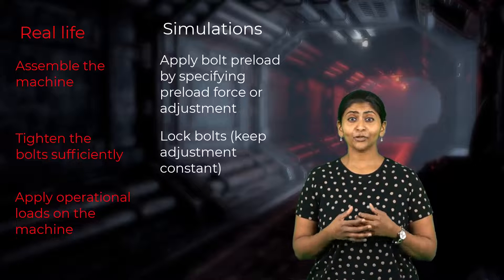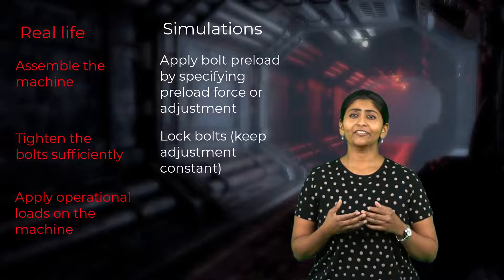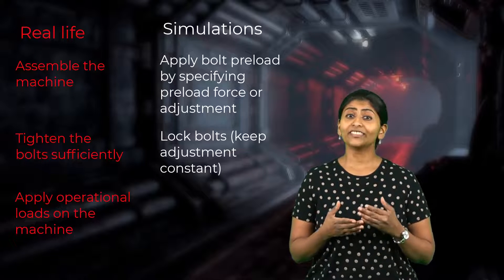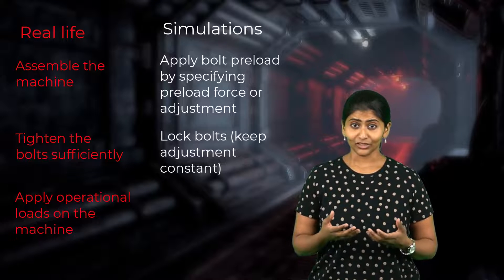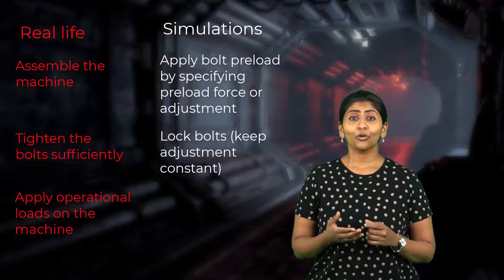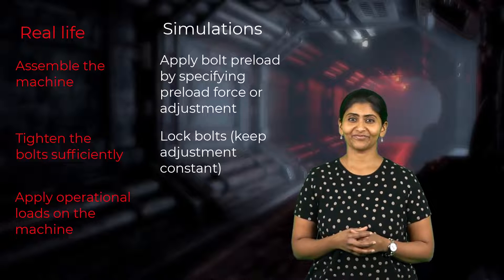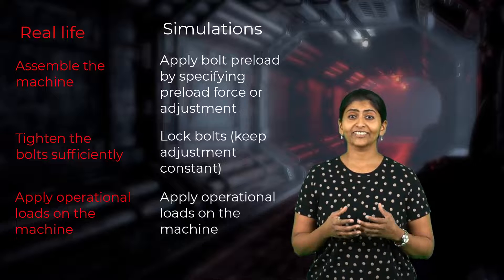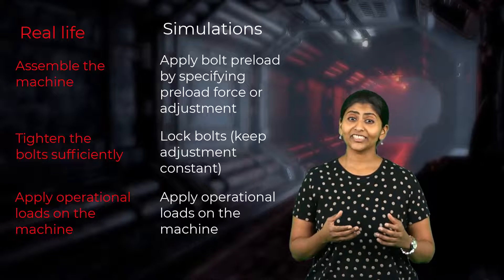In the subsequent steps, we lock the bolts by fixing the relative motion at the cut interface with this adjustment. In other words, when we lock the bolts, we hold this adjustment constant. This represents the fact that the bolts stay tightened when the machine is loaded.